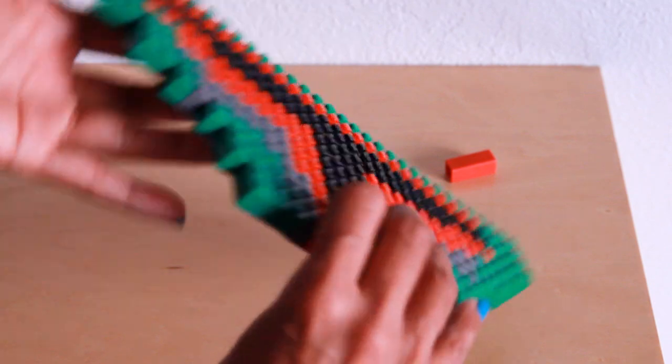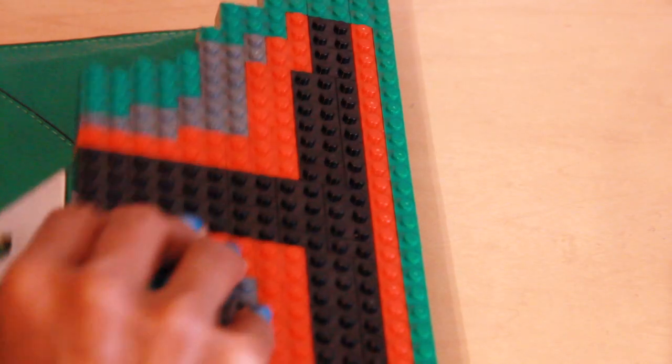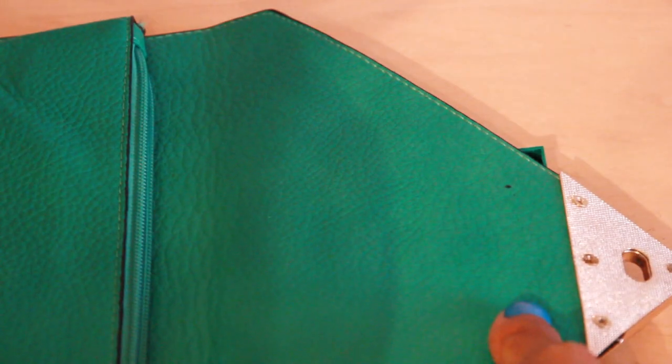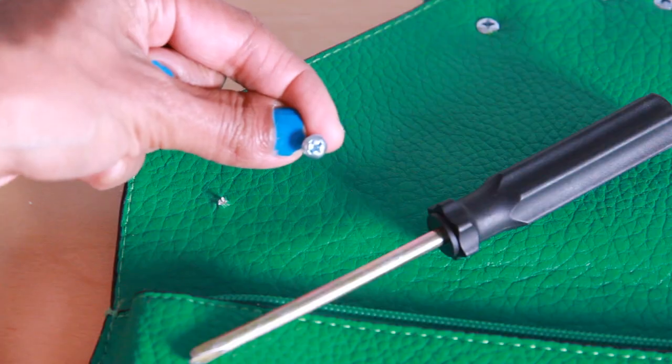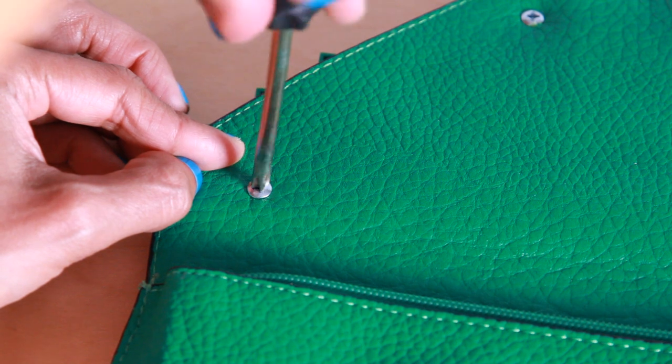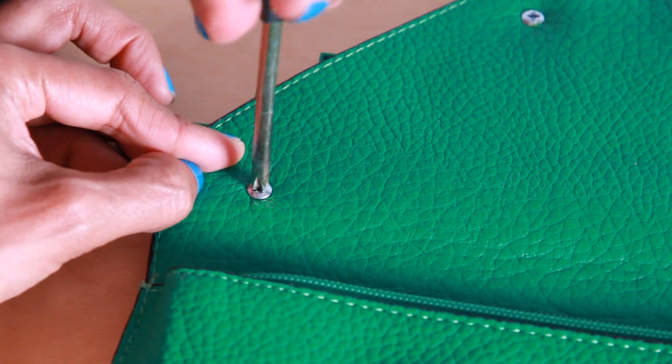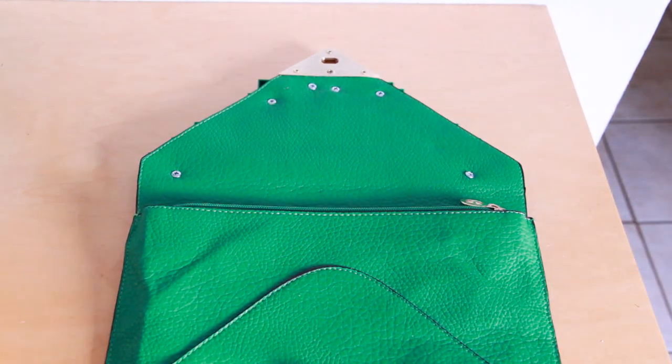When you've finished your Mandalorian masterpiece, place it on the clutch and mark where you want the screws to go. Use a power drill to drill a small hole through the bag and through part of the plate. Then use a small screwdriver to twist the screw into place. Secure the plate onto the bag in as many places as you think necessary.